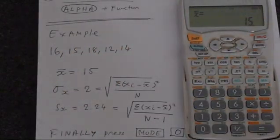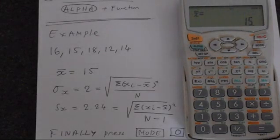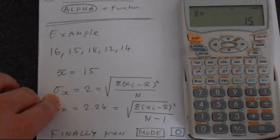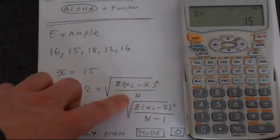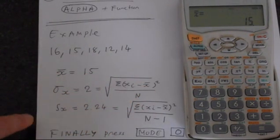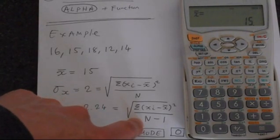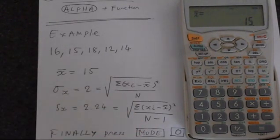To get the standard deviation, there's two different types of standard deviation you can use in this calculator. The first one is the sigma x. This is the definition of standard deviation involving dividing by n. Then you've got sx, which is the n minus 1 definition of the standard deviation.